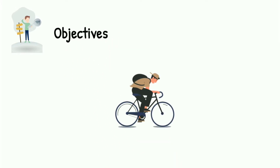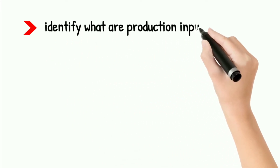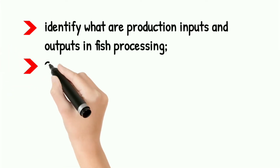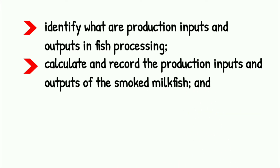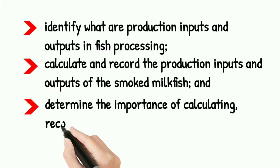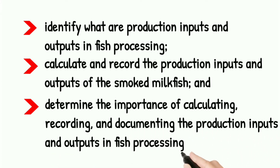Let us start with our objectives. Take note of these since these will serve as your guide and target. At the end of the lesson, you are expected to: firstly, identify what are production inputs and outputs in fish processing; then, calculate and record the production inputs and outputs of the smoked milkfish; and lastly, determine the importance of calculating, recording, and documenting the production inputs and outputs in fish processing.